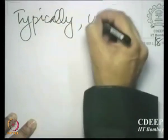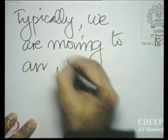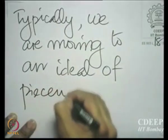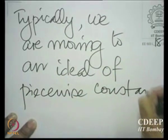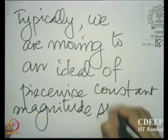And even among magnitude specifications, typically what we have are piecewise constant specifications. So typically we are moving to an ideal of piecewise constant magnitude specifications. In fact, even among these there are four particular sets of piecewise constant magnitude specifications that we would often aim to move towards. Let us enumerate them one by one.